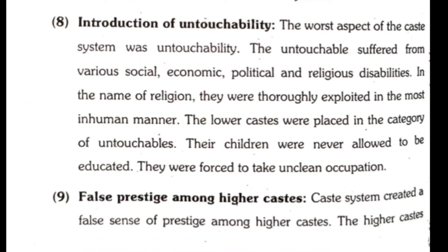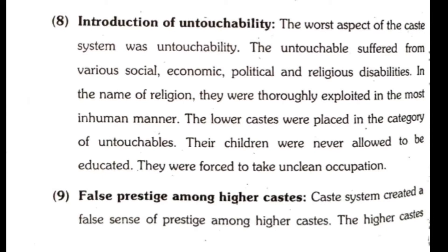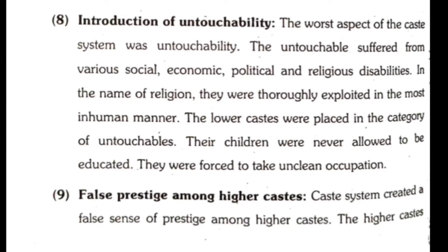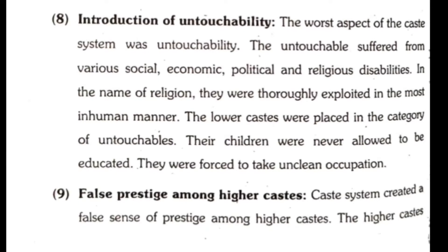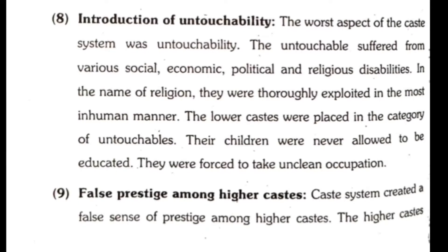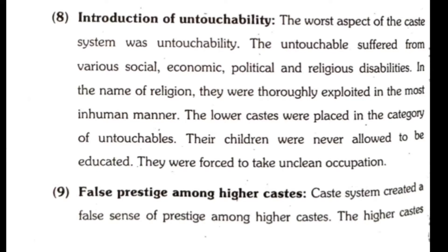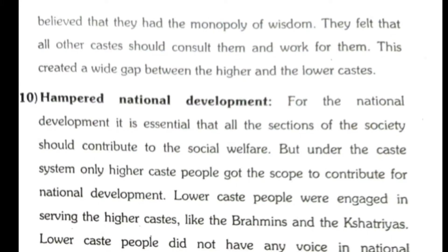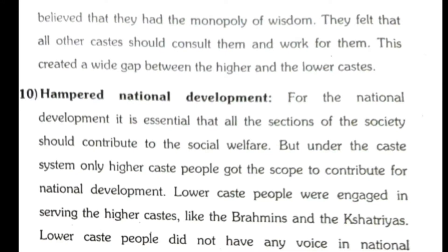Eighth, introduction of untouchability. The worst aspect of the caste system was untouchability. The untouchables suffered from various social, economic, political, and religious disabilities in the name of religion. They were thoroughly exploited in the most inhumane manner. The lower caste were placed in the category of untouchables, their children were never allowed to be educated, and they were forced to take unclean occupations. Ninth, false prestige among higher caste. The caste system created a false sense of prestige among the higher caste, who believed they had the monopoly of wisdom and that all other castes should consult and work for them. This created a wide gap between higher and lower caste.